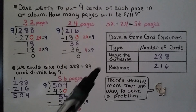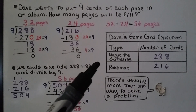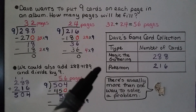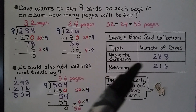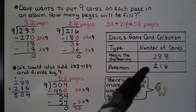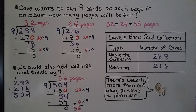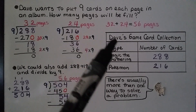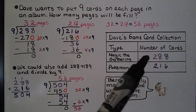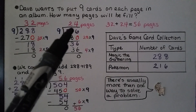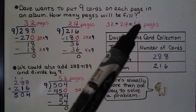Now we have a word problem with a table: Dave's Game Card Collection. He has 288 Magic the Gathering cards and 216 Pokemon cards. Dave wants to put 9 cards on each page in an album. How many pages will he fill? There are two ways to solve this: we can do 288 divided by 9, then 216 divided by 9, and add those page totals together.